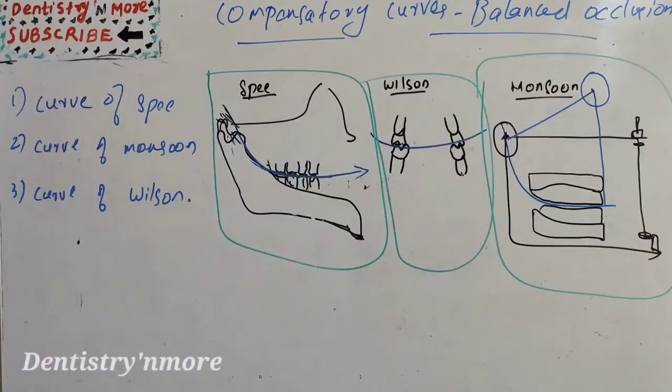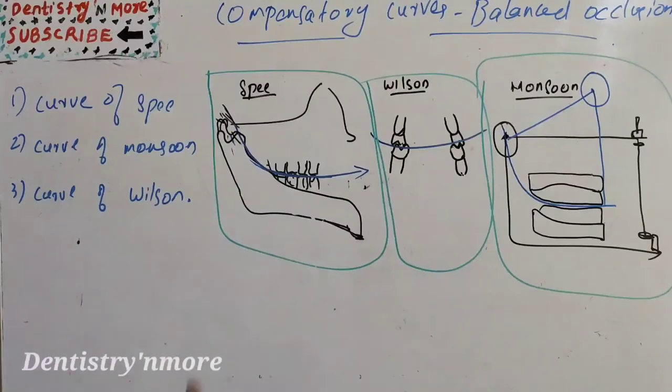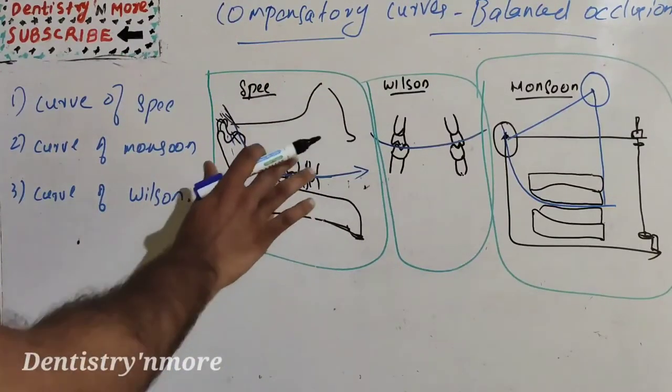So this should be the teeth arrangement. If you are arranging in a curve of Spee, there will not be any much forces which can dislodge the balanced occlusion or dislodge the denture. So we need to arrange in a curve of Spee alignment.